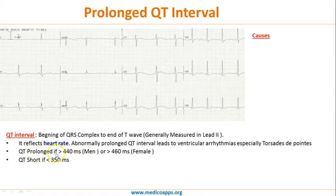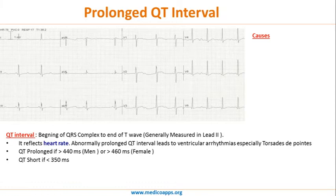QT is prolonged if more than 440 milliseconds, or 460 milliseconds in females. QT is short if less than 350 milliseconds — that's around 8 small squares. If it is less than 8 small squares it is short; if more than 11 small squares it is prolonged.